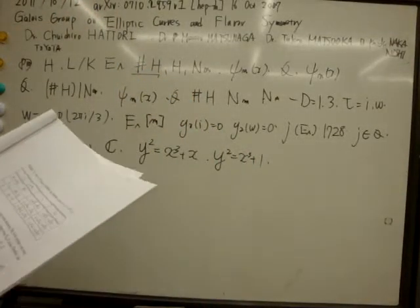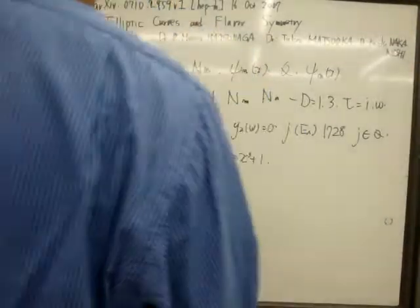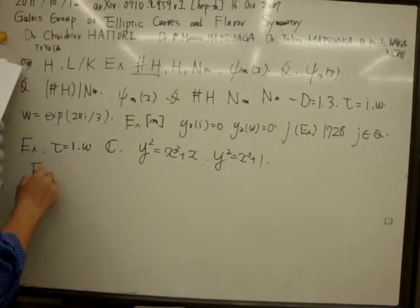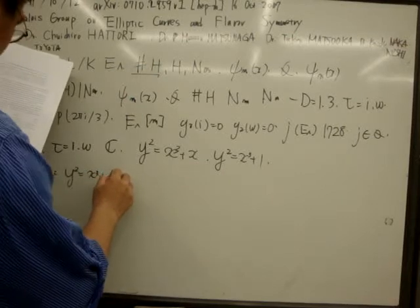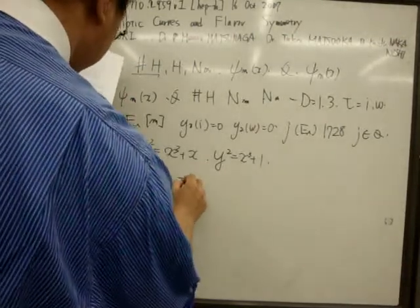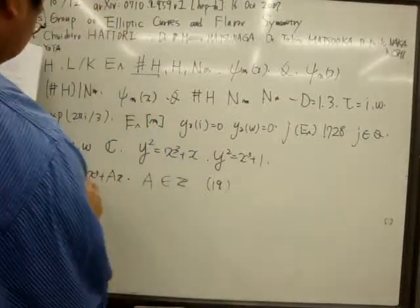Here we focus on the elliptic curve E lambda: y² equals x³, a∈Z (equation 19).